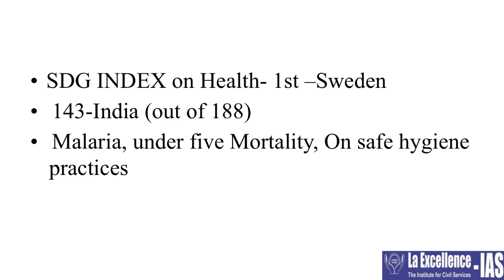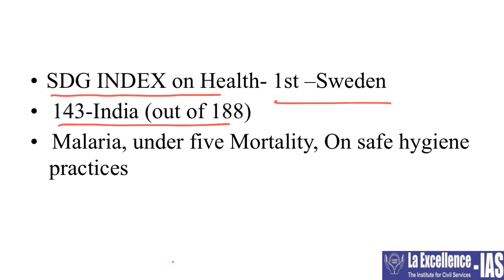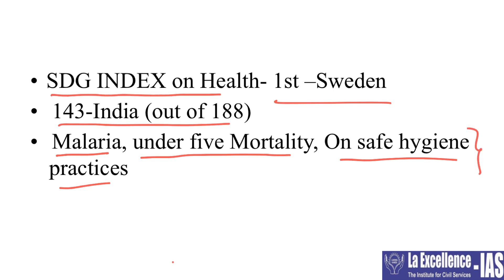The other important issue is the SDG Index — the Sustainable Development Goal Index on health — which is very important. Sweden got first and India got 143 out of 188. UPSC may directly ask you India's rank in the sustainable development goal index. Some factors they consider are malaria, under-five mortality, and safe hygiene practices. In these factors India is performing fairly badly, which has led to India's rank being at a lower grade.